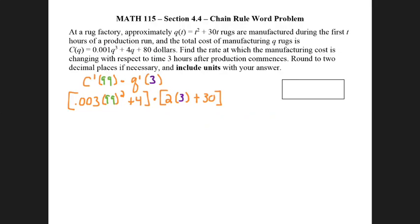So as I work this out, I end up getting 33.403 for the derivative of cost relative to 99 rugs being made, and as I take the derivative of number of rugs made relative to time, I end up with 36.